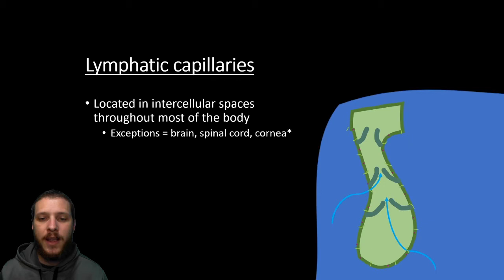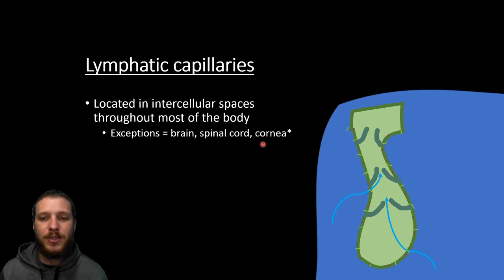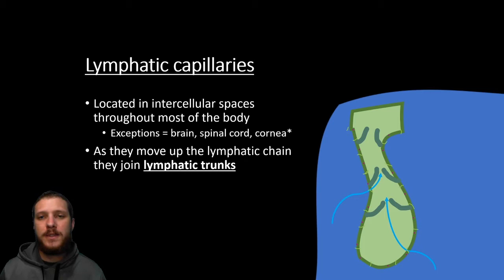You find these lymphatic capillaries everywhere you find blood vessels, located in the intracellular spaces throughout the body. The book says the exception is the brain, spinal cord, and cornea. However, within the last five to ten years, we're finding more and more that there is a lymphatic system of the brain, so that information may be outdated. The cornea is in a somewhat privileged, zoned-off area of the body with its own little immune system, so it likely doesn't have lymphatics.